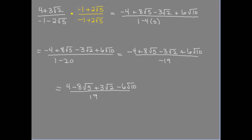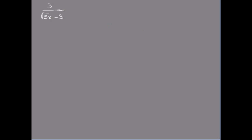So far we've worked with just numbers, but sometimes you have variables in your radicals. For example, three over the square root of five x minus three. Even though this radical is in the denominator, you still multiply by the conjugate. Multiplying, I get three times the square root of five x plus three times three, which is nine, over five x minus nine. This is not reducible because even though there are threes and a nine, I cannot divide all terms by three since five x does not divide by three. So we leave it exactly like it is.